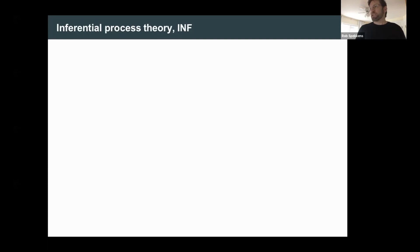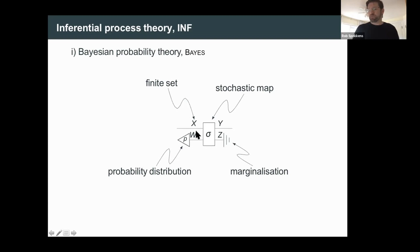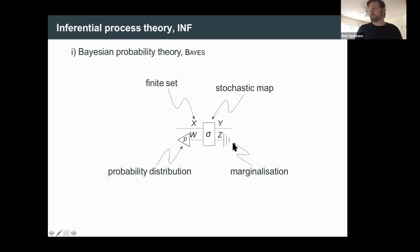The Bayes component is a symmetric monoidal category of stochastic maps on finite sets, with wires running horizontally to distinguish from the causal vertical wires. The second component of the inferential theory is propositional logic, called 'Bool'. On finite sets we can encode propositions as yes/no questions — functions from the finite set to the Boolean set. Logical operations like disjunction are represented by copying the system, applying each proposition, and taking the disjunction of Boolean answers using the standard truth table. Negation is the proposition followed by the Boolean 'not' operation.